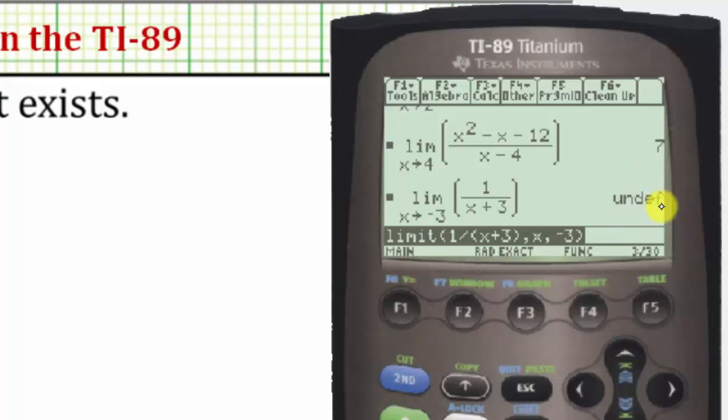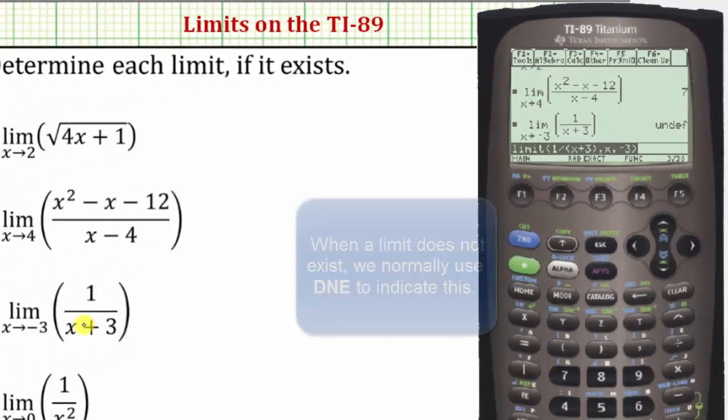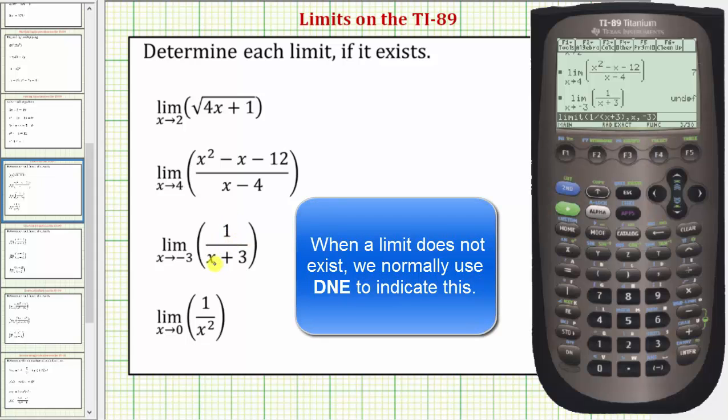Notice this limit is undefined, indicated by the calculator, and this means the limit does not exist. So whenever we find a limit and the calculator says undefined, again, this indicates the limit does not exist. What we should recognize is because if we were to graph f of x equals one divided by the quantity x plus three, notice how we'd have a vertical asymptote at x equals negative three, which is the value we're approaching.